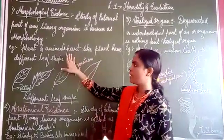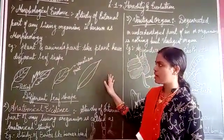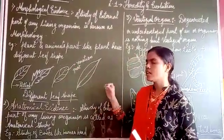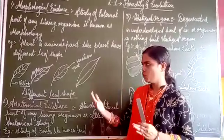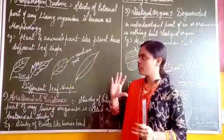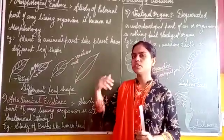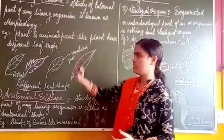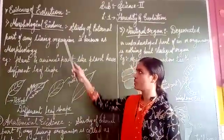Next thing, if we consider animals — animals are having different parts and the positions, that is eyes, nose, tongue, ears — their position is same. But the appearance, how they look, that is a different thing. So that is also morphology. From that we come to know that they are coming from their ancestors. That is nothing but morphological evidence.